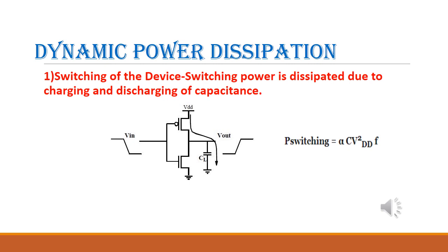Next, let us see dynamic power dissipation. The first cause is due to the switching activity of the device — that is, due to the charging and discharging of the capacitor. When the PMOS transistor is on, current flows from VDD to ground, charging the capacitor. When PMOS is off and NMOS is on, the charge discharges through NMOS. This charging and discharging causes switching power dissipation, given by P_switching = α × C × VDD² × f.